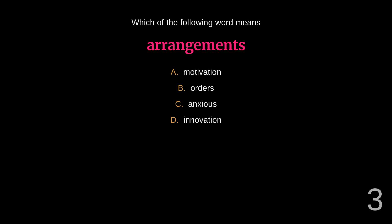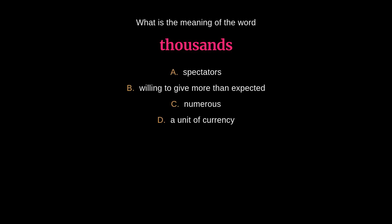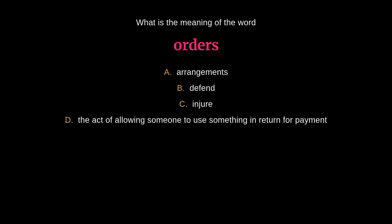Quiz: Which of the following words means Arrangements? The answer is B: Orders. What is the meaning of the word Thousands? The answer is C: Numerous. What is the meaning of the word Orders? The answer is A: Arrangements.